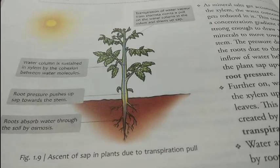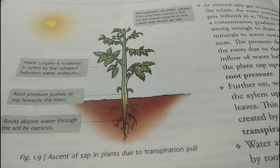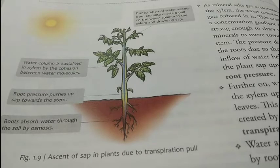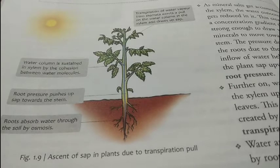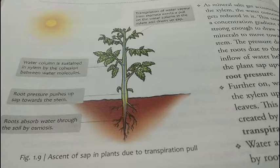Transpirational pull को ऐसे समझते हैं कि जब आप cold drinks को पीने के लिए bottle में straw लगाते हैं और उसे अपने मुँह से suck करते हैं, तब cold drink आपके मुँह तक जाती है। ठीक इसी तरह से plant से water transpiration की मदद से loss होता है।